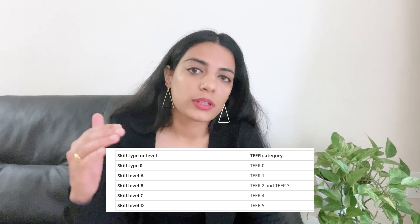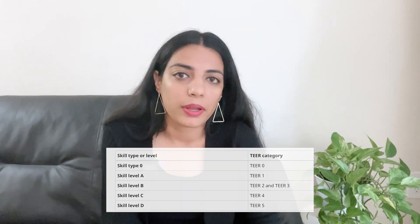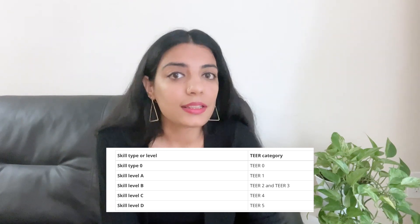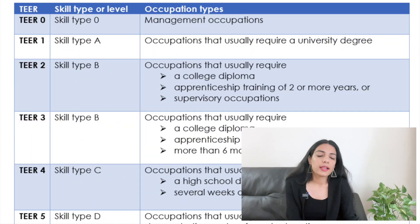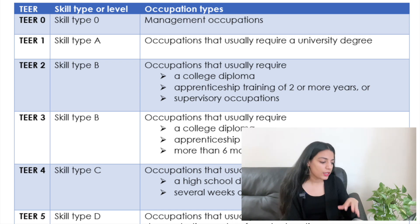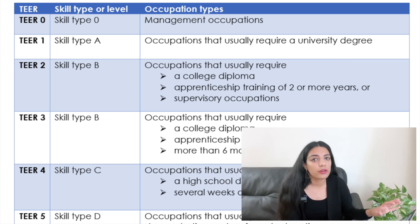The new system, NOC 2021, has been converted to a TEER level system. TEER stands for Training, Education, Experience and Responsibilities. This model goes from Tier 0 to Tier 5, meaning you now have 6 skill levels instead of 5. The mapping is available on Canada's government website. Skill level 0 is equivalent to Tier 0, like the management field. The first skill type A is now Tier 1, which requires a university degree.